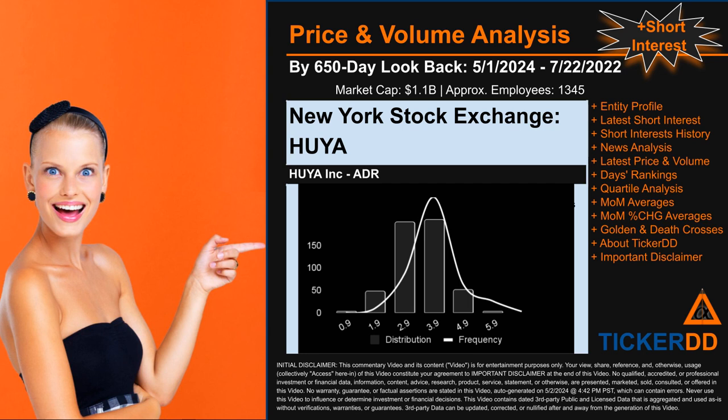Now that we have made our lawyers happy, capitalist brothers and sisters, let's get started. HUYA went public on May 11, 2018, which was roughly six years ago. Looking back 650 calendar days from Wednesday May 1st, 2024 to Friday July 22nd, 2022, we found 447 applicable trade dates for use in our analysis. This ticker has a market capitalization of about 1.1 billion dollars. Based on available licensed data, we think that the company HUYA Inc. ADR has 1,345 full-time employees — consider that number to be an estimate.